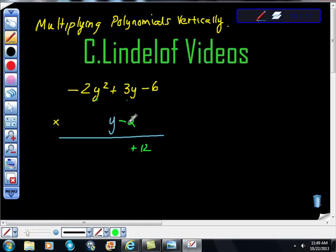Negative 2 times positive 3y is negative 6y. Negative 2 times negative 2y squared is 4y squared. Right? Negative times a negative is a positive. So there's that piece.